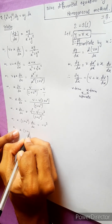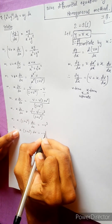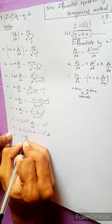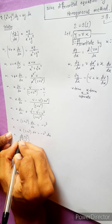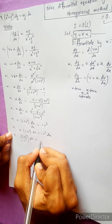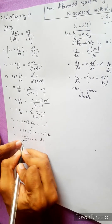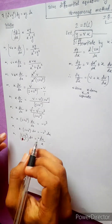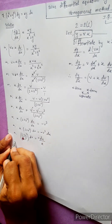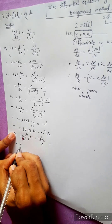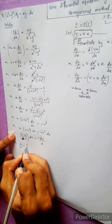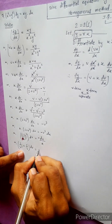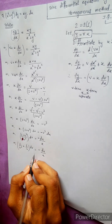x times (1 plus v squared) dv equals to minus v cubed dx. This is minus 1 by v cubed plus v squared by v cubed into dv. This is minus dx by x. This is what we have to do here.